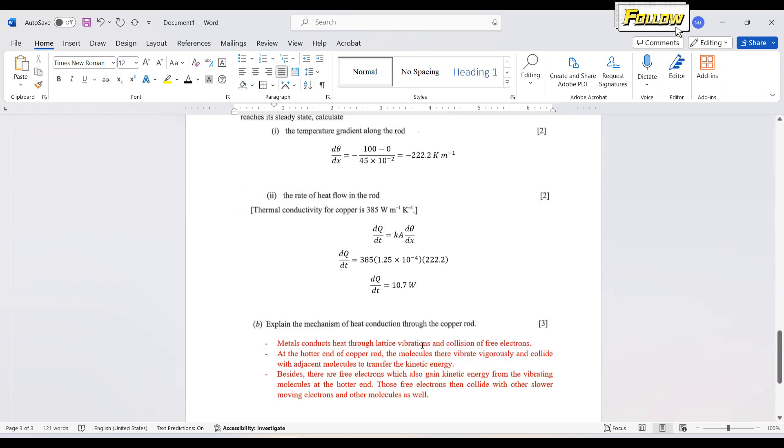So at the hotter end of copper rod, this is how the lattice vibration occurs. The molecules vibrate vigorously and collide with adjacent molecules to transfer the kinetic energy or the heat energy. And besides, we have free electrons in the metal which also gain kinetic energy from the vibrating molecules at the hotter end. So those free electrons are also responsible to collide with other free electrons which is lower and also other molecules as well. So this is how you answer the mechanism of heat conduction through the copper rod. And that's conclude the section B of past year in 2022. Thank you.